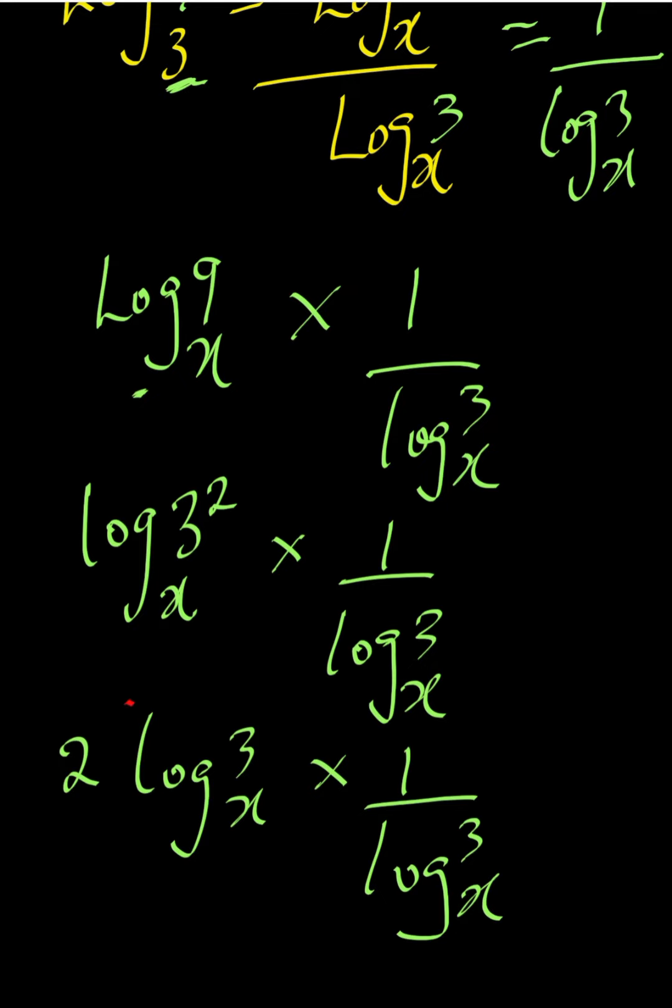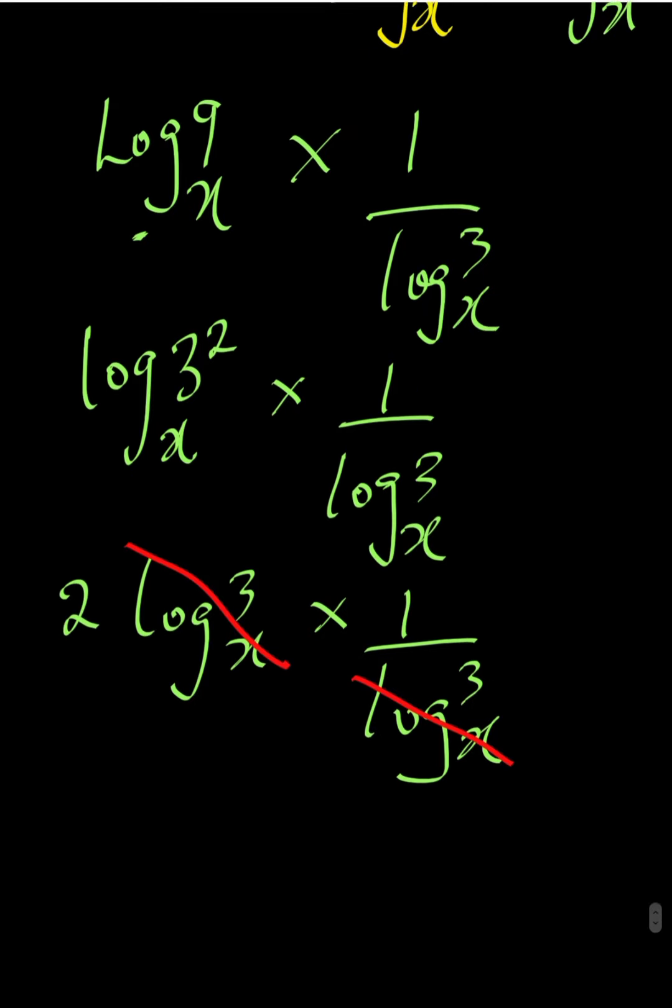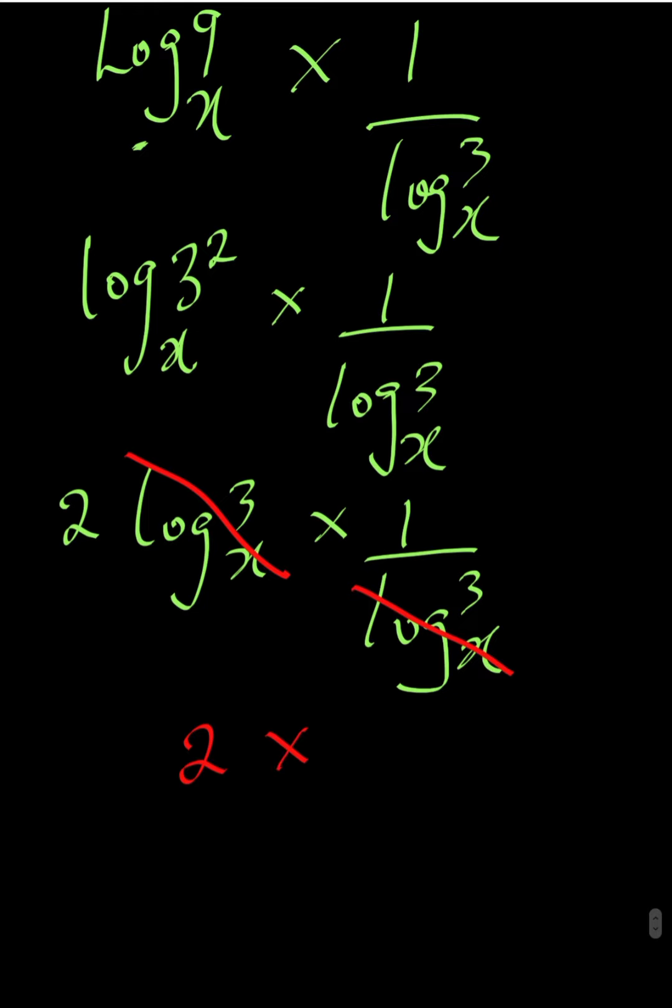From here log 3 base X we cancel log 3 base X. We are left with 2 multiplied by 1, and of course this will give us 2. Do not forget that this video is proudly powered by your lesson app.